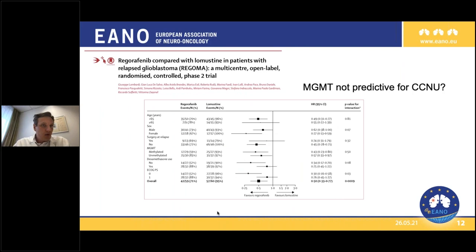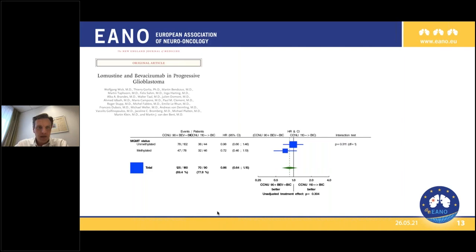We can also look at other trials. The REGOMA trial is a good example, comparing regorafenib with lomustine as the control arm, where no indication of MGMT being predictive for benefit of chemotherapy was seen. For completeness, EORTC 26101 can also be looked at, but again the study design is not really helpful in answering whether MGMT is predictive here, because CCNU was used in both treatment arms.